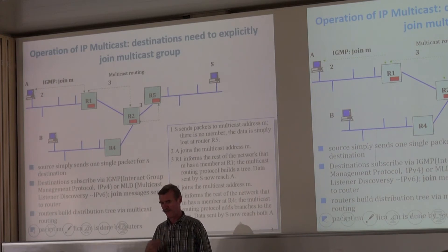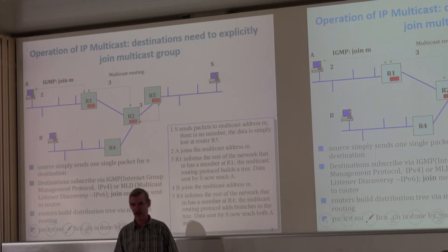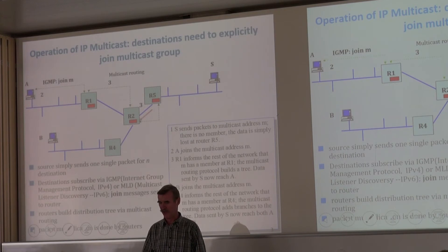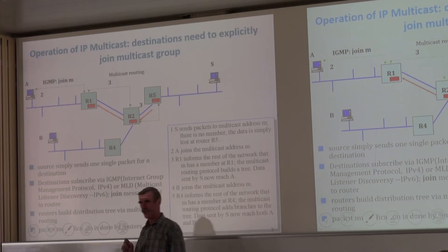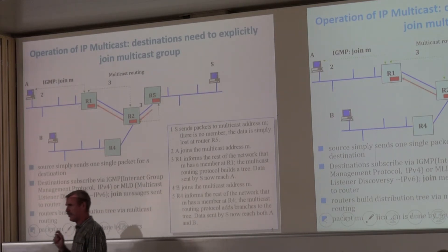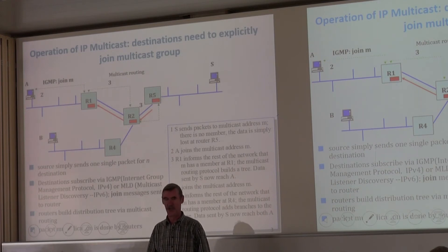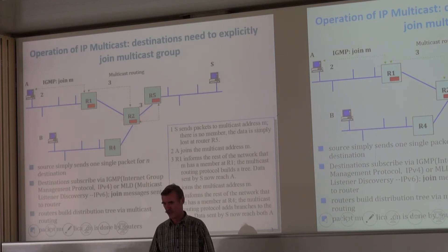After A has joined, the three routers have built the tree. The next time S sends a packet, when it reaches R5, R5 looks in its table and sees packet with destination M should go to R2. R2 does the same — forwards to R1. R1 receives the packet, puts it on its local area network, and A receives the packet.